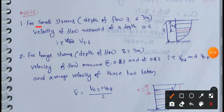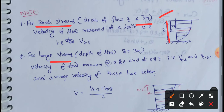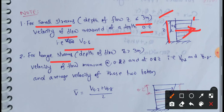For small streams where depth of flow Z is less than or equal to 3 meters, we consider small streams. Velocity of flow is measured at a depth of 0.6Z — that is, 0.6 meters below the water surface — giving us V₀.₆.